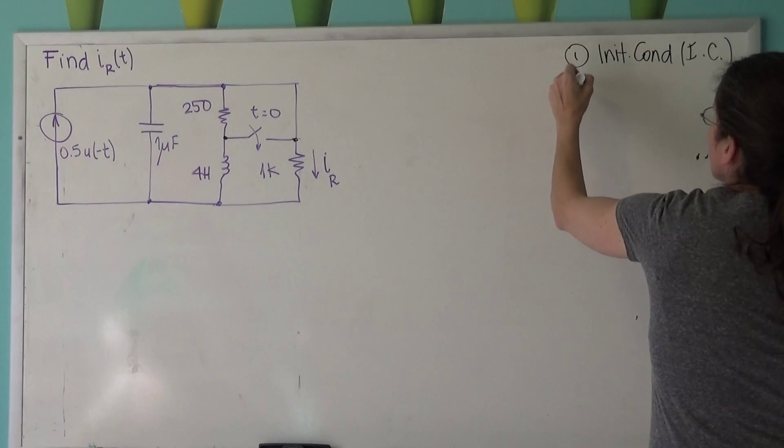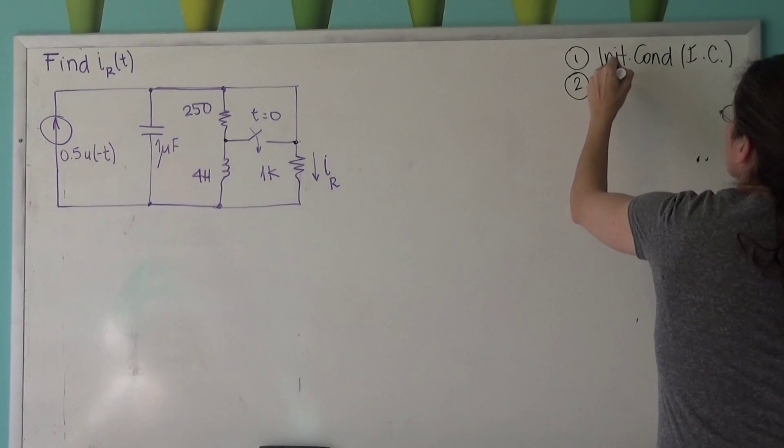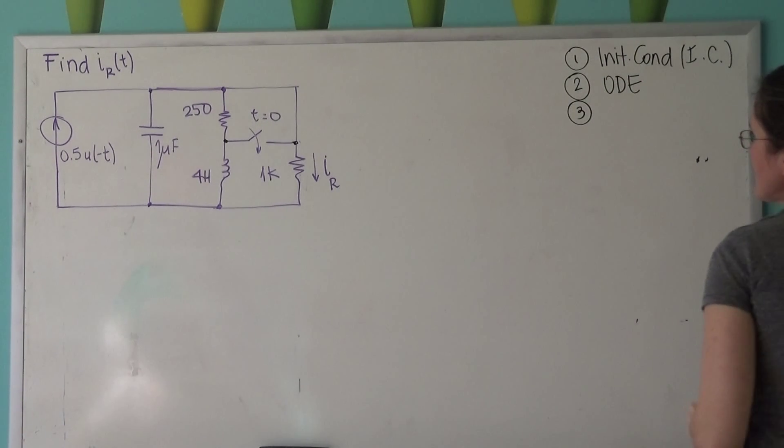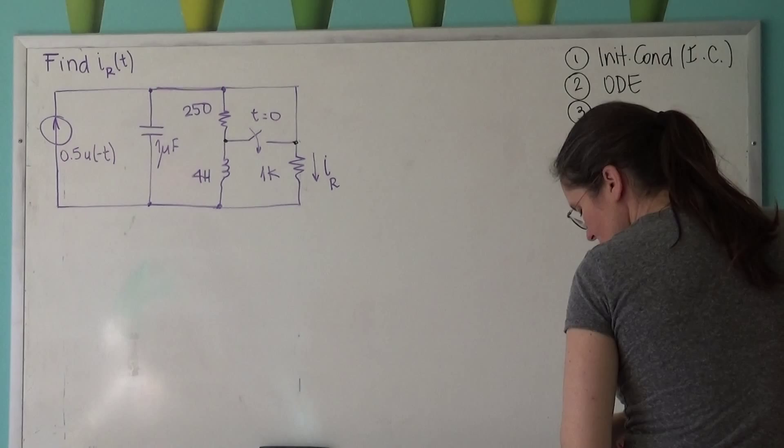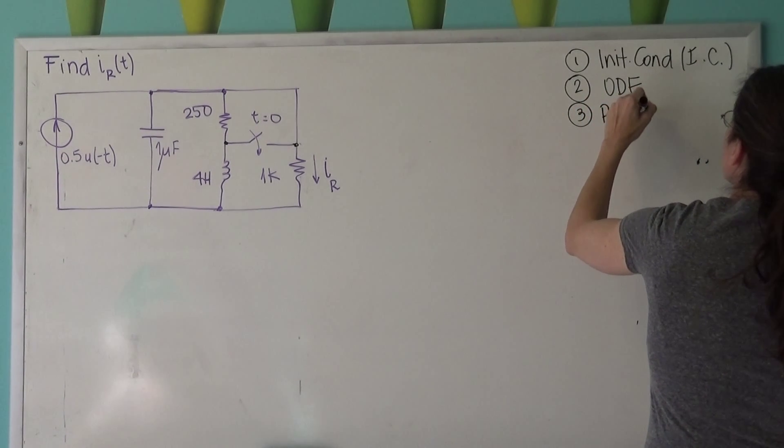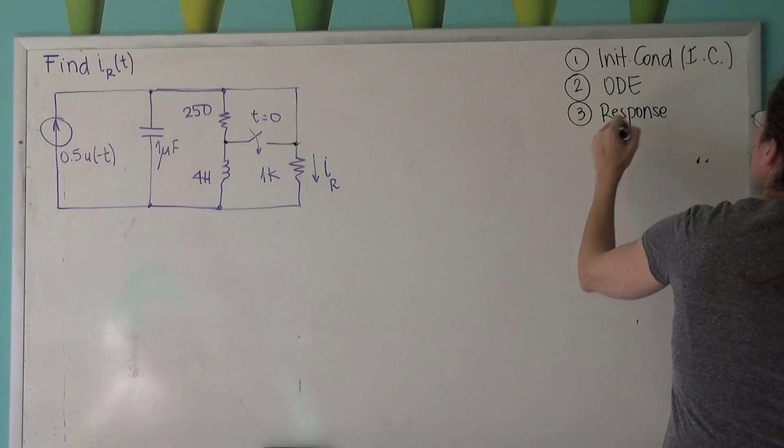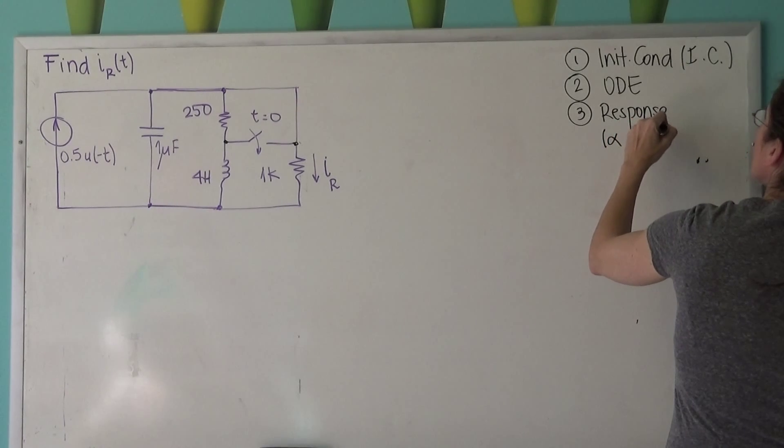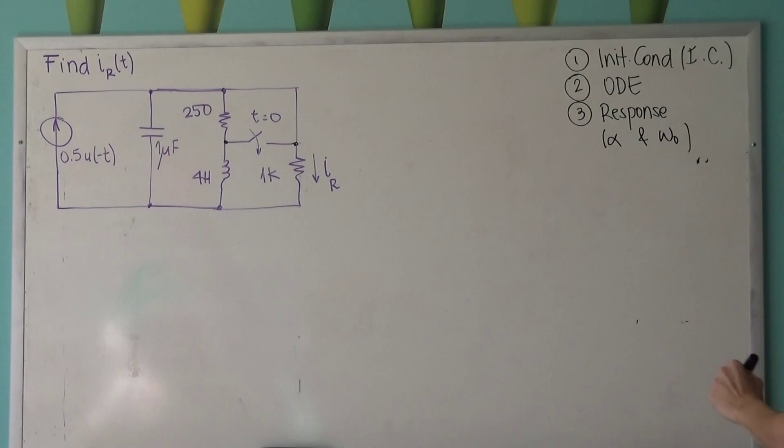The second thing is going to be write the differential equation that is characteristic of the circuit. And the third thing is the response, which is under-damped, over-damped, or critically damped. And then we'll find alpha and omega-naught by doing that. And then number four, I am following what I wrote.